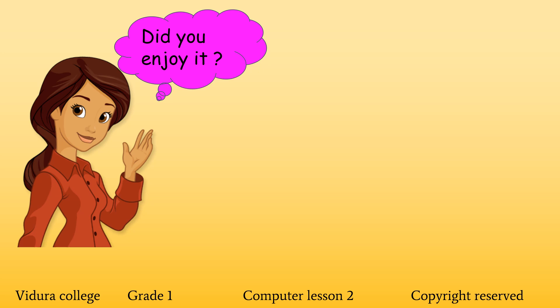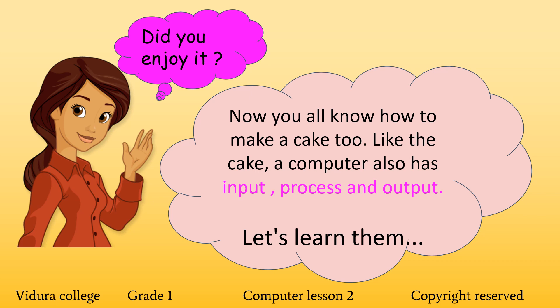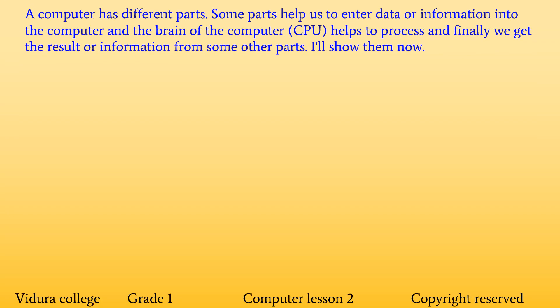Did you enjoy it? Now you all know how to make a cake — you can make a cake at home with your parents. Just like the cake, a computer also has input, process, and output. You all know that a computer has different parts. Some parts help us to enter data or information into the computer. The brain of the computer, the CPU, helps to process. And finally, the result shows up in some other parts. I will show them now.